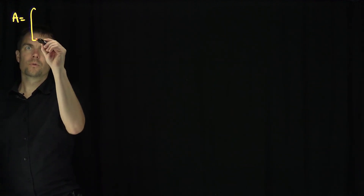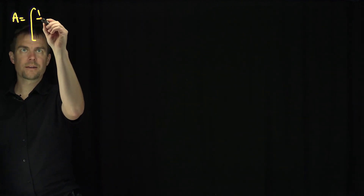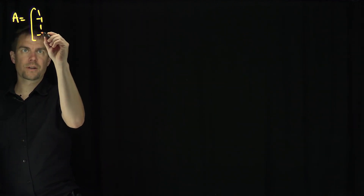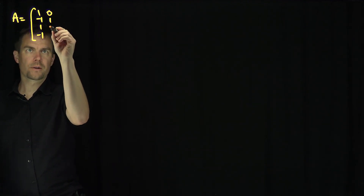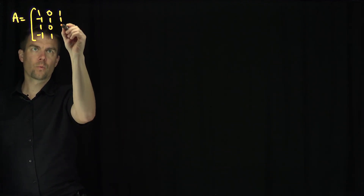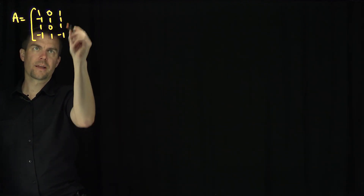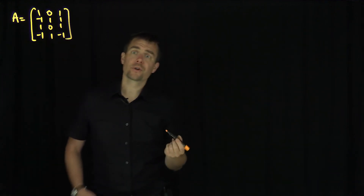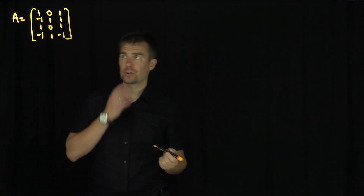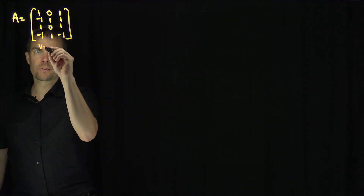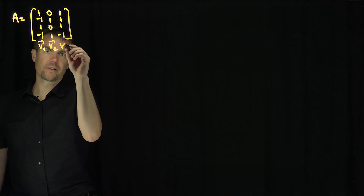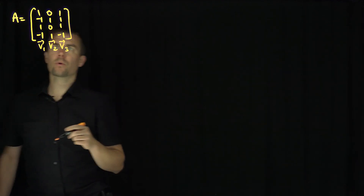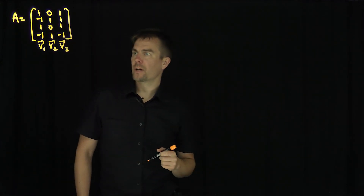Let's consider the matrix A, which is the 4 by 3 matrix: 1, -1, 1, -1 in the first column; 0, 1, 0, 1 in the second column; and 1, 1, 1, -1 in the third column. I'm going to call the first column V1, the second column V2, and the third V3.